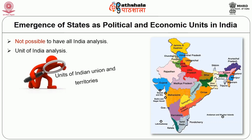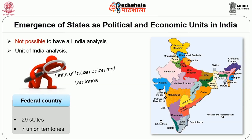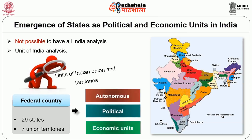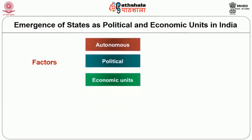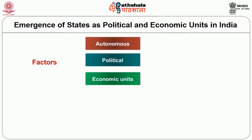As you know, India is a federal country consisting of 29 states and seven union territories, and all these states are becoming a kind of autonomous political and economic units. Today we are going to discuss precisely this — what are the factors which have led to the emergence of the states as autonomous political and economic units.